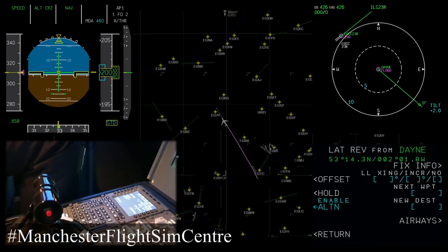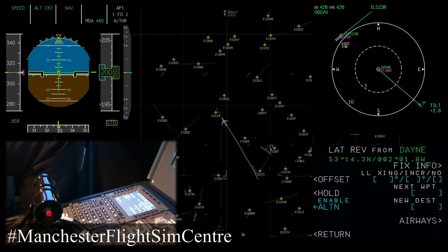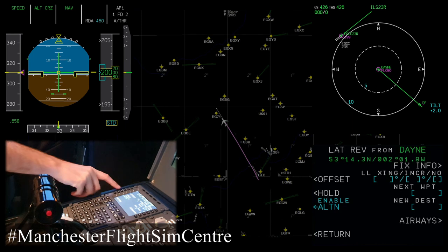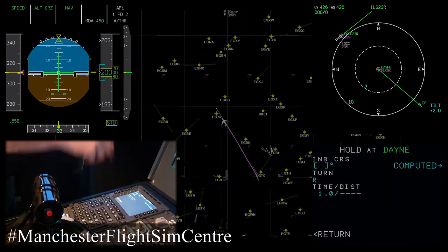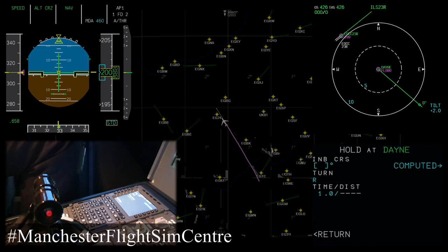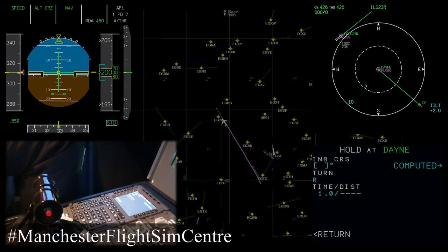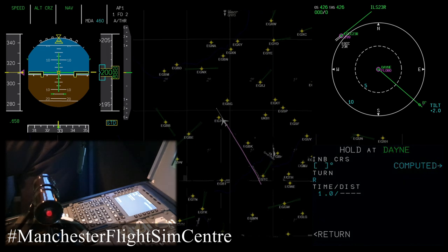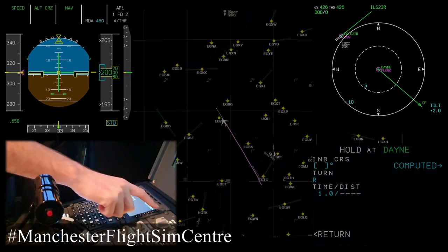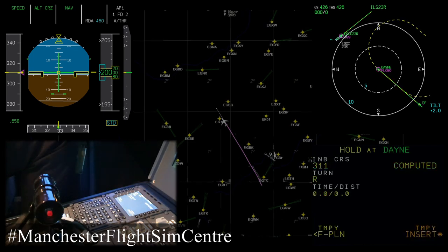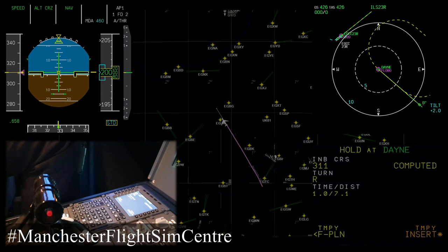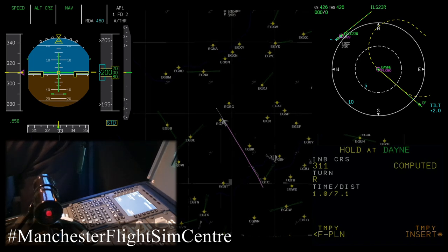So lateral revision from Dane. Several options are here, but the option we're interested in today is the hold option. Selecting that, we can see the hold page with the hold at Dane. If there is a database hold within the FMGC database, then the database hold will be presented to us. Today there isn't, but we do have a computed option. So let's take a look — I'm going to select computed. Computed is essentially a suggestion by the FMGC of what it considers a sensible hold based on our approach today.